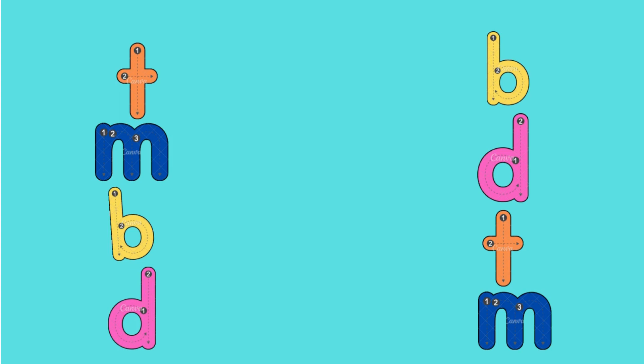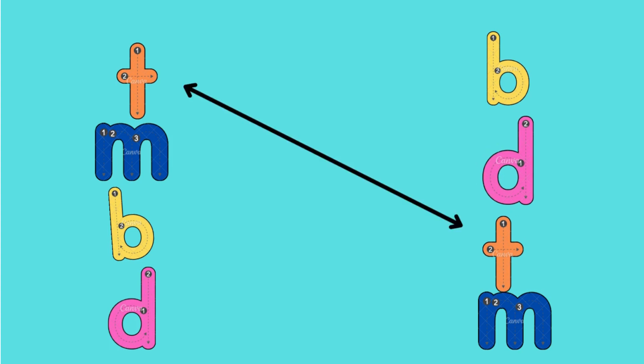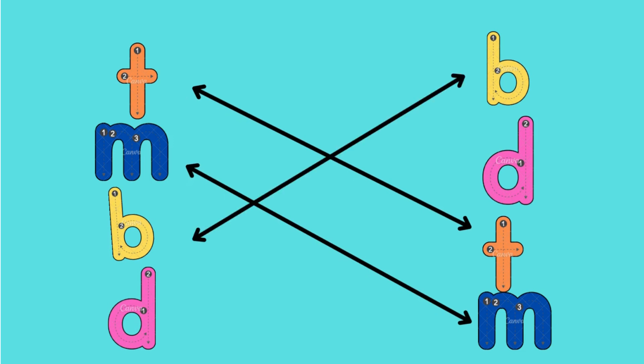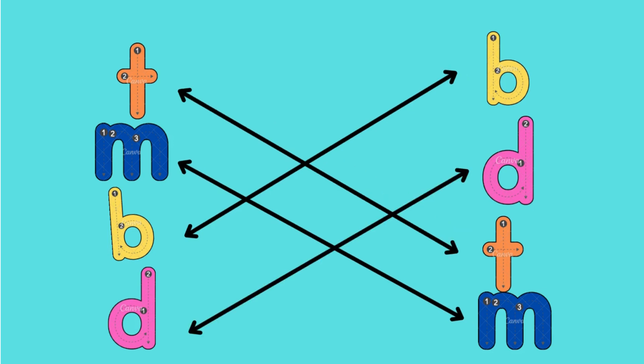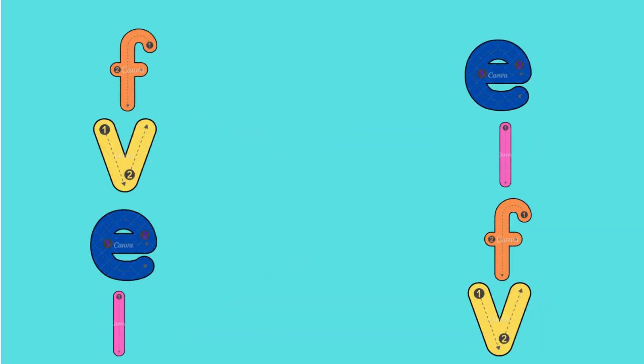Where is the small t? Match it. Yes. And where is the small m? Yes, you're right. Where is the small d? It's the yellow one. And where is the small d? The last one — match it, hurry up. Yes, you're right, good job!